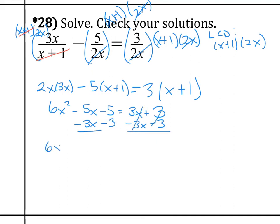So we get 6x squared minus 8x minus 8 equals 0. So let's go ahead and factor out a 2. Always look at the GCF to make this a little nicer for yourself. So you're left with 3x squared minus 4x minus 4 equals 0. Now this is factorable.